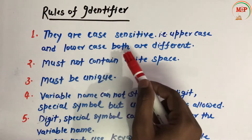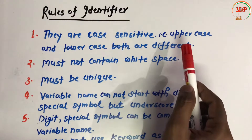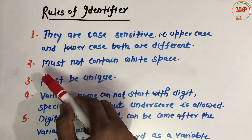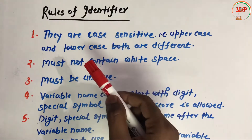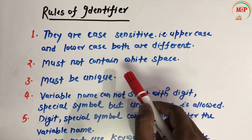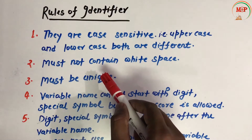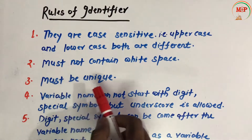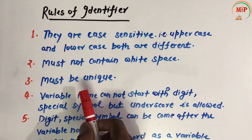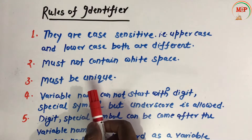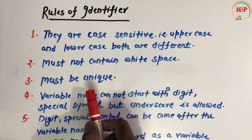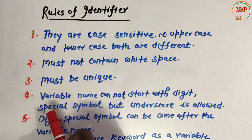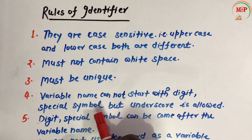Case sensitive means uppercase and lowercase are different — for example, small 'a' and capital 'A' are treated as different variables. The second rule is that an identifier must not contain white space, so a variable name cannot include spaces. The third rule is that identifiers must be unique. The fourth rule is that a variable name cannot start with a digit or special symbol, but an underscore is allowed.